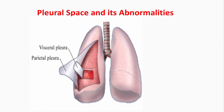Normally the pleural space is filled with a fluid called pleural fluid — a thin layer of mucoid fluid between the two pleura that acts as a lubricant. Its quantity is about a few milliliters and its pressure is normally about minus five centimeters of water. The negative sign shows this is a suction pressure. This pleural suction pressure serves to keep the lungs open.